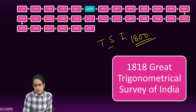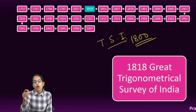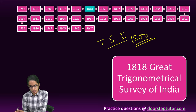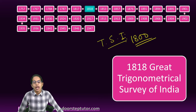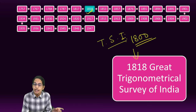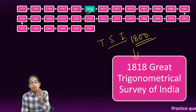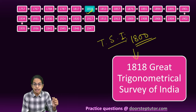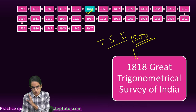However, after the defeat of the Marathas in the Anglo-Maratha War, the whole territory south of the Satlaj River came under British control. As a result, they expanded their survey, and later in 1818 it was named the Great Trigonometric Survey, which mapped India from the south all the way to the Trans-Himalayan region.